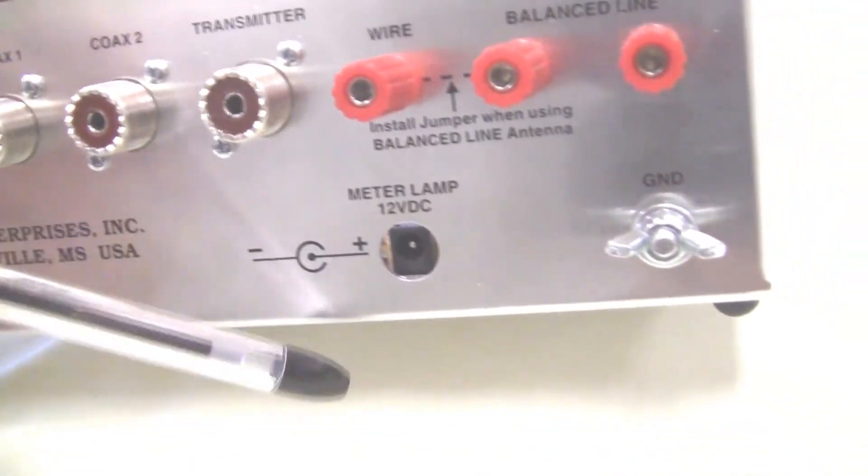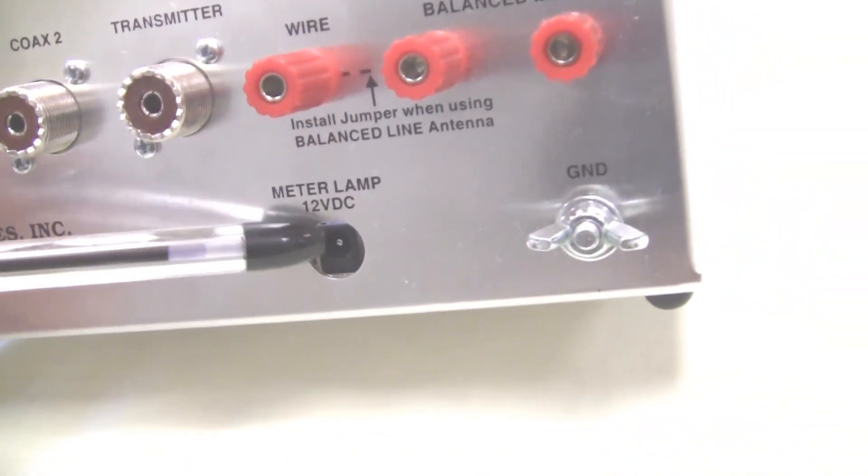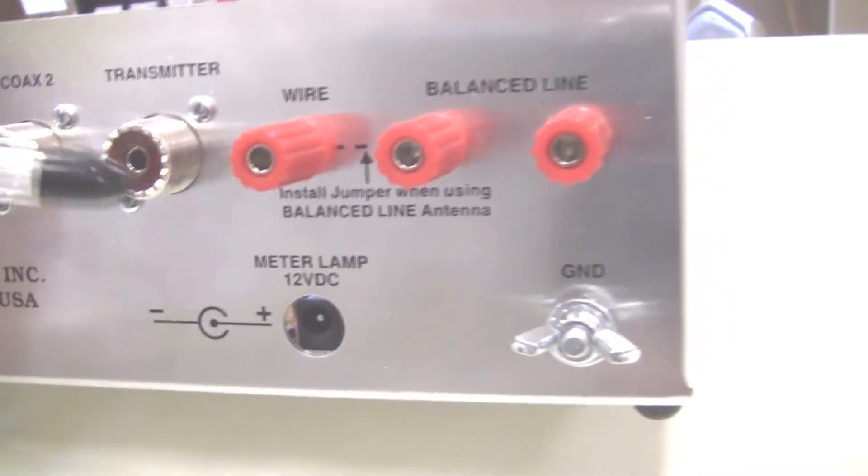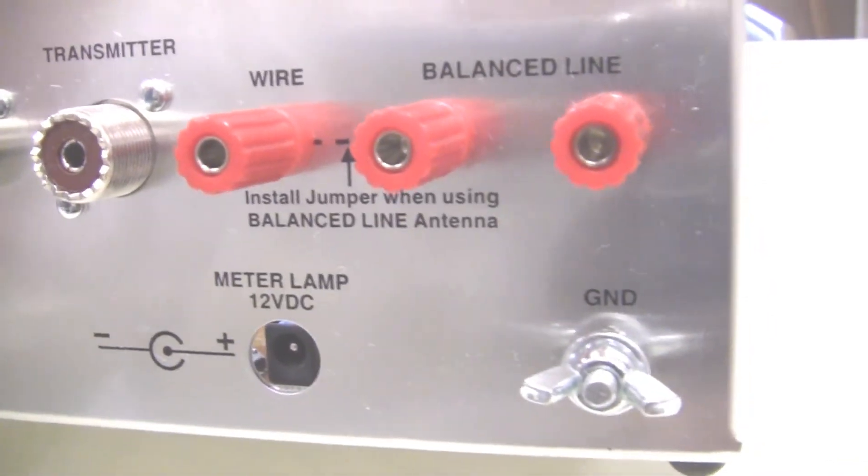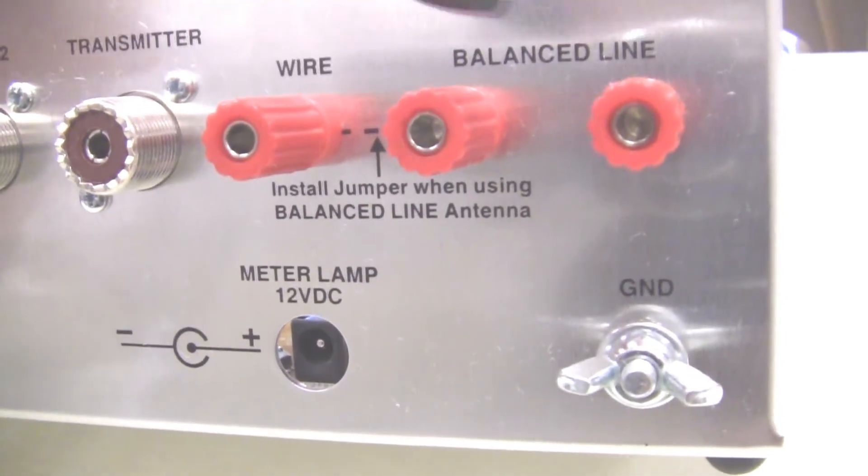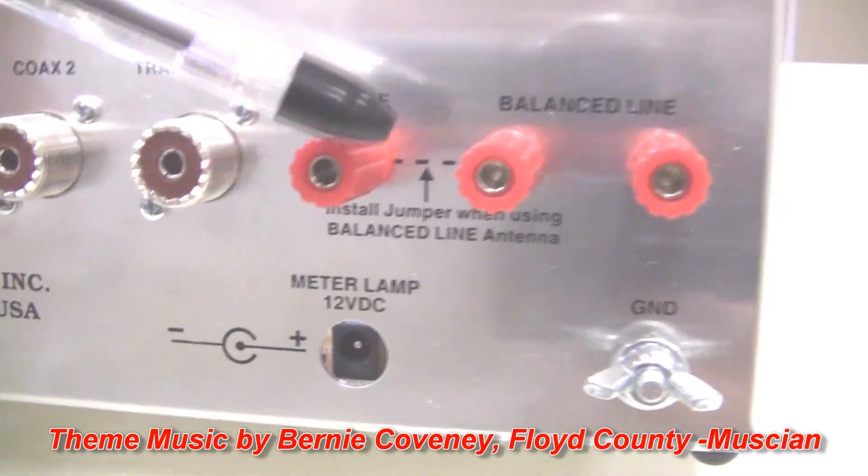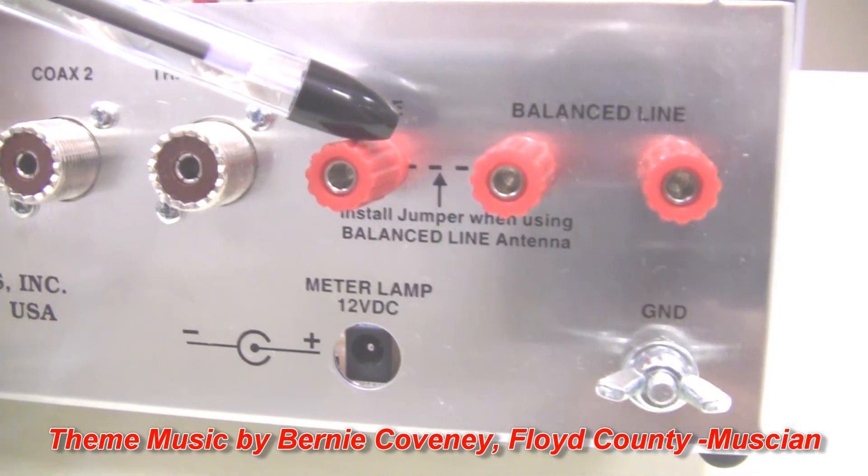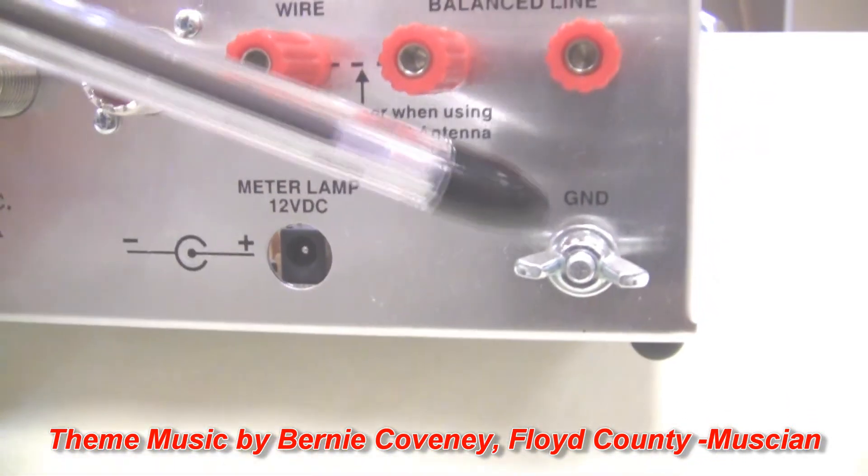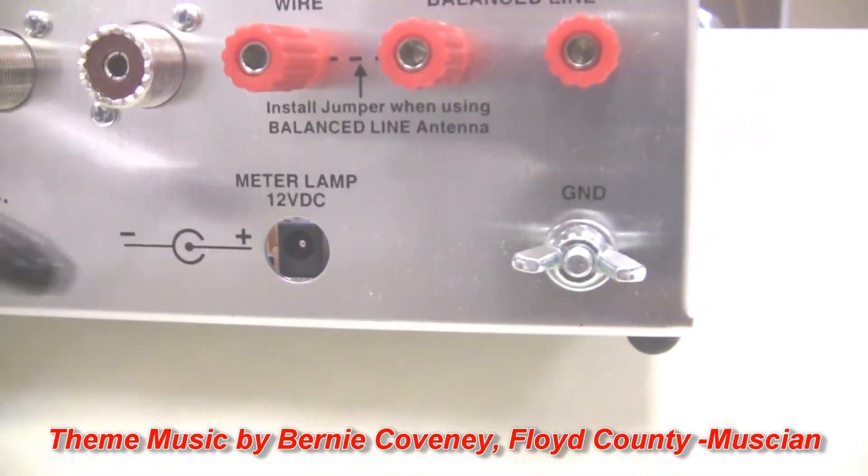Down here is where you would put in the 12 volts if you want a meter light. And for using this with balanced wire, here's the connection for the balanced wire or balanced lead. We have to put a jumper between these two to do balanced feed. And here's the connection for ground.